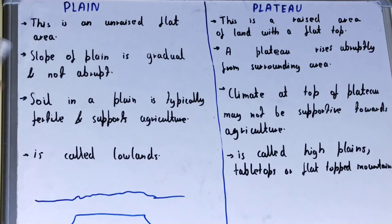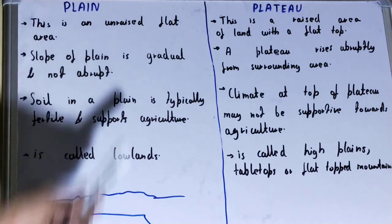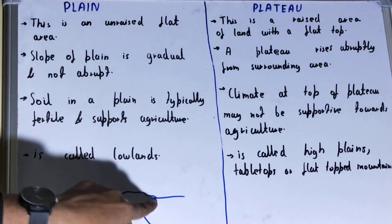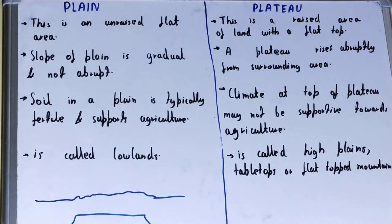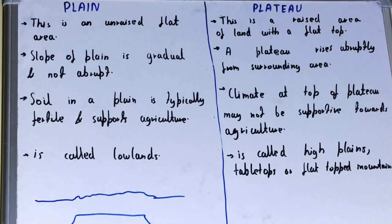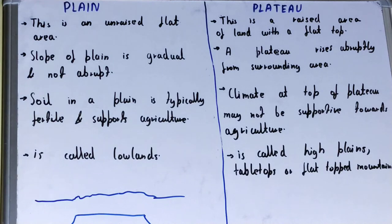Next, if you talk about the plane, the slope of a plane is gradual and not abrupt or sudden. You can see there is a slight slope with the ground level, but it is not abrupt or sudden. But if we talk about the plateau, our plateau rises abruptly — or suddenly — from the surrounding area. You can see there is a sudden rise from the surrounding area.